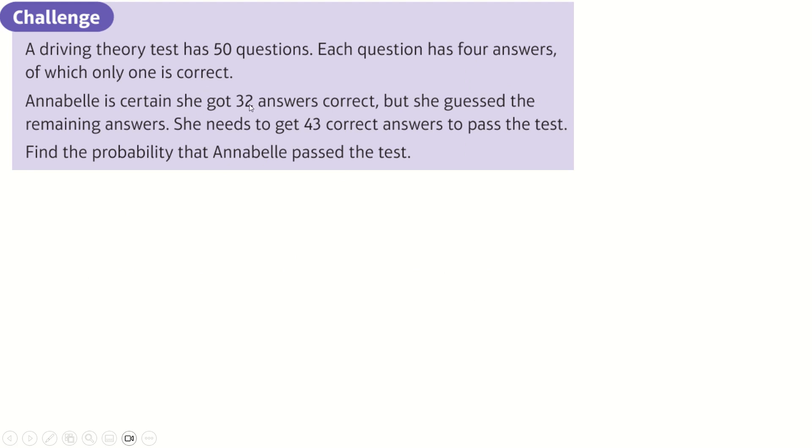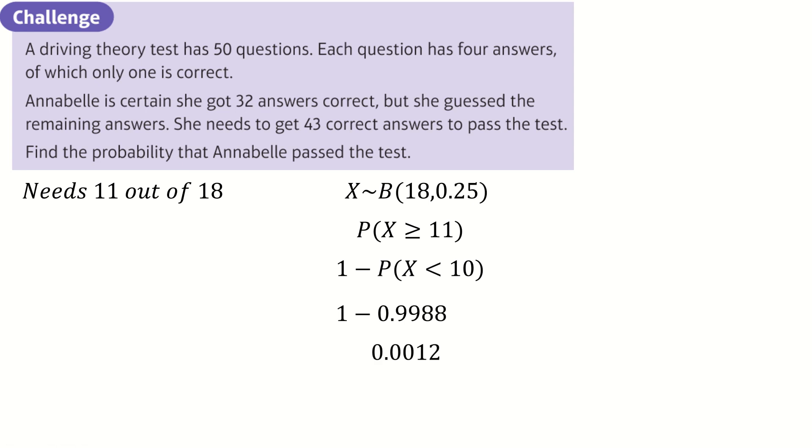A driving test has 50 questions. This person is, for some reason, certain she got 32. Guess the remaining ones. She needs another 11 questions correct. So, what's the probability of getting 11 out of 18 further questions is correct, with a probability of 0.25, because there are 4 answers. We want the probability of greater or equal to 11, which is 1 minus the probability of less than or equal to 10. I have no idea why this is a challenge question, because you've just typed into a calculator, and you get the answer.